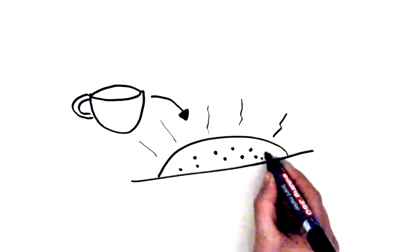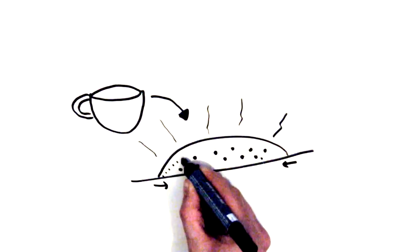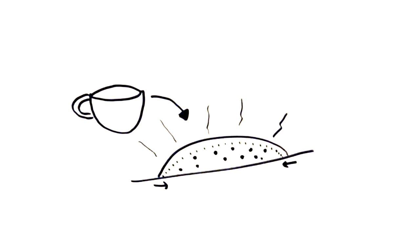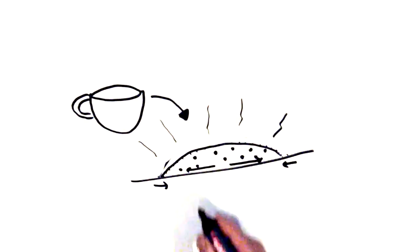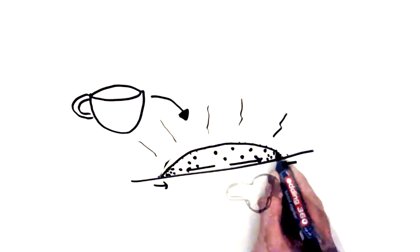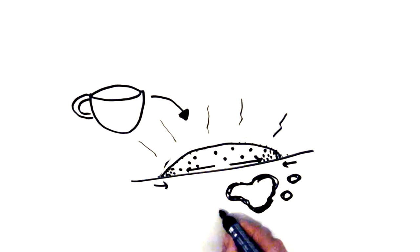When the water inside of a coffee spill starts to evaporate, the drop gets smaller and smaller. But there is a drag on the surface area. These two factors cause a flow of water towards the edge to replenish the evaporated water. This flow drags the tiny coffee particles towards the edge and form a ring.